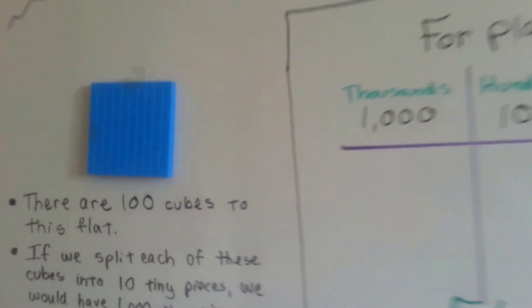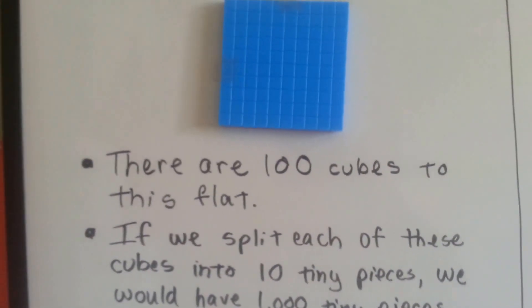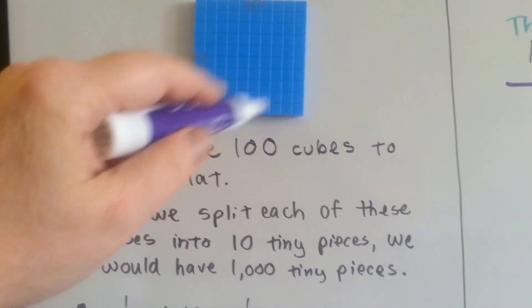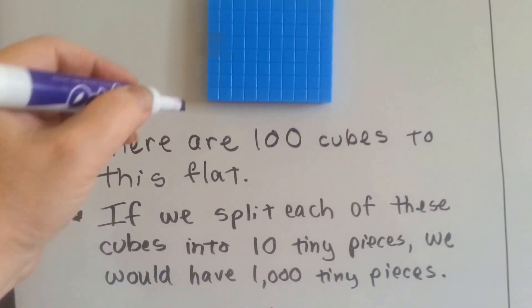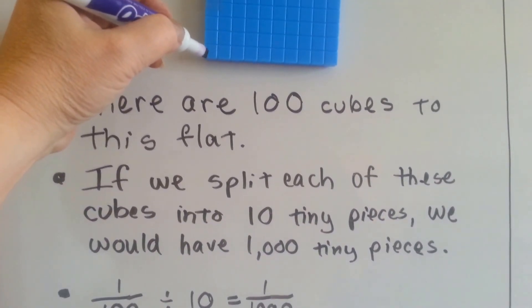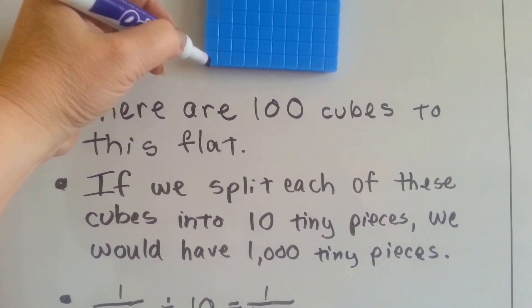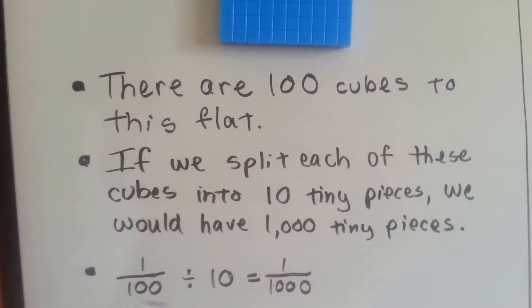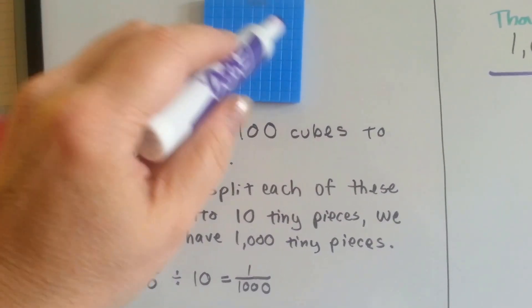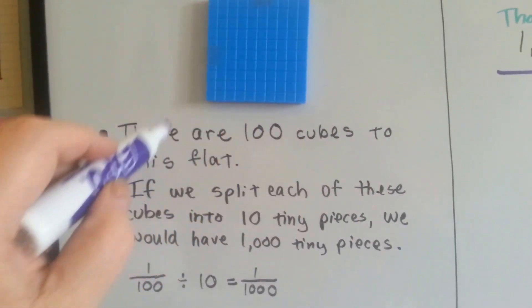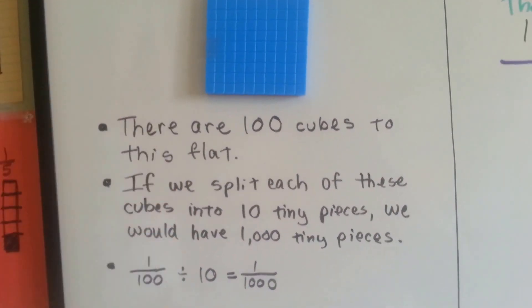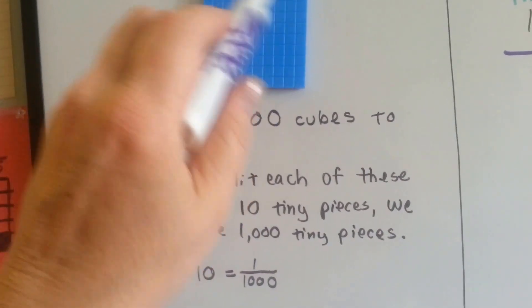There are a hundred cubes on this flat. Can you see all the little square cubes? If we took one little cube — like this little corner cube right here — and we split it into ten pieces, one of those tiny pieces would be one thousandth. Because already one piece is one one-hundredth of this whole flat, so if I split this tiny corner cube into ten pieces, it would become one thousandth of this flat.